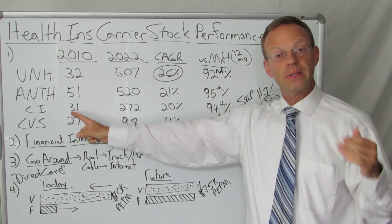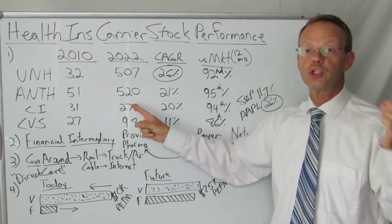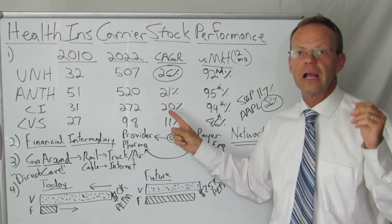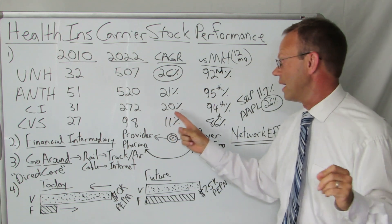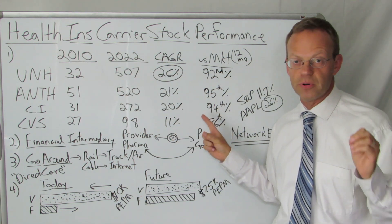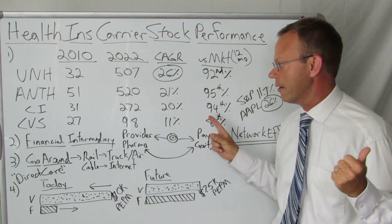Next up, Cigna. In 2010, when the ACA was passed, their stock price was 31. Now, 272. That is a 20% compounded annual growth rate. They are in the 94th percentile, better than 94% of all other stocks in America.